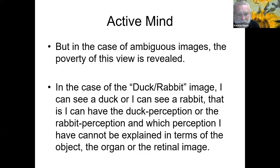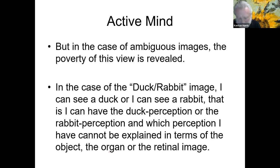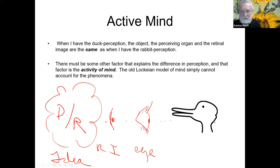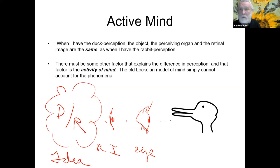In the case of the duck-rabbit, I can see a duck or I can see a rabbit — a duck percept or a rabbit percept. Which perception I have cannot be explained in terms of the object, the organ, or the retinal image, because in this case those are all identical. But the percepts are different. So there must be something else going on besides mere passive reception of information — there's an interpretive act. There must be some other factor explaining the difference in perception, and that factor is the activity of mind. The old Lockean model simply cannot account for this.